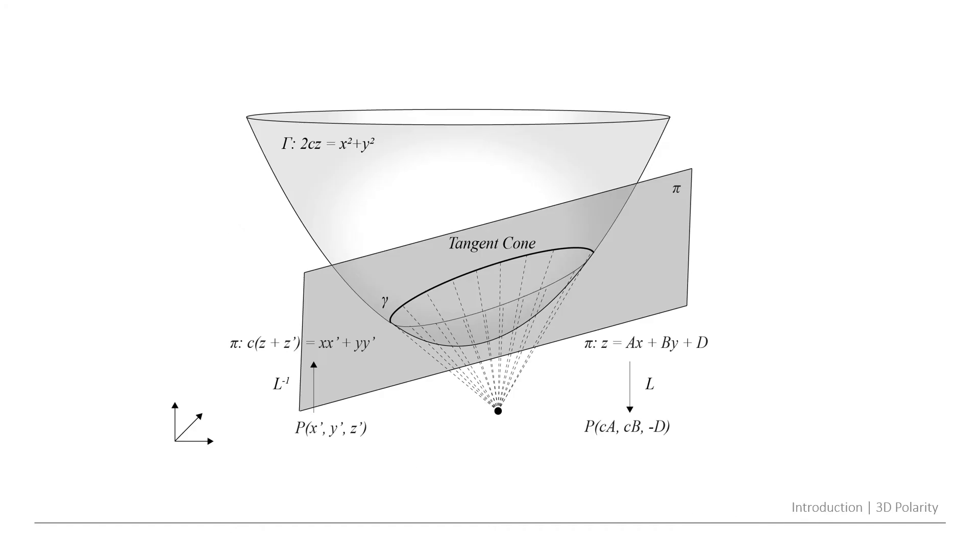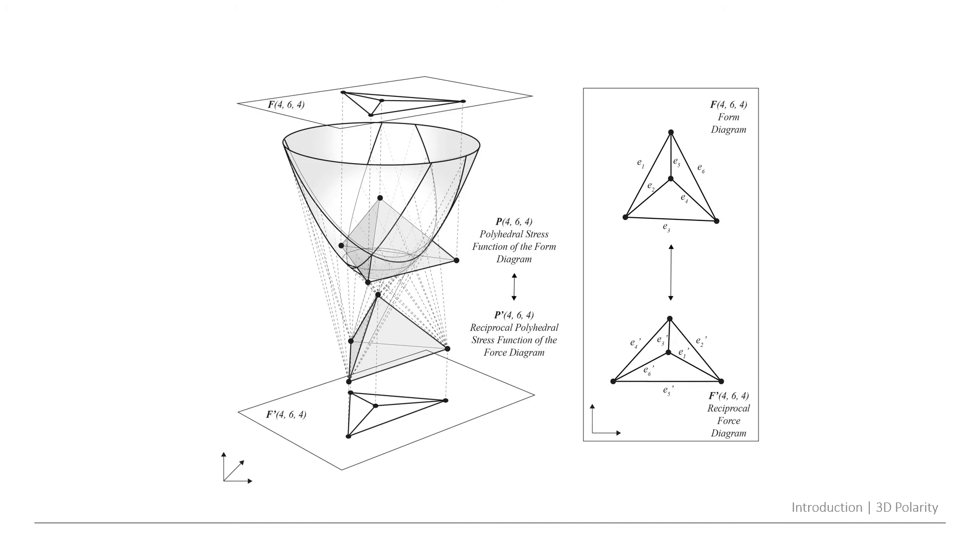When it comes to the 2D/3D case we have a three-dimensional polarity in which a point maps to a plane, and that can be done in a number of ways. You can do this purely geometrical construction using a paraboloid of revolution and the tangent cone. You could use directly the equations if you have the coordinates for the point, or it's possible to use matrix operations. By using this polarity we can map reciprocal polyhedra to each other, and then if those are projected on the plane we readily get a form and force diagram.